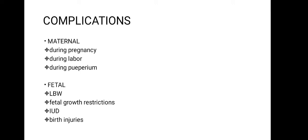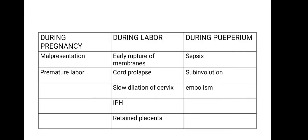Moving on to complications, these are divided into maternal and fetal. Fetal complications include low birth weight, fetal growth restriction, intrauterine death (IUD), and birth injuries. Maternal complications during pregnancy include malpresentation — persistence of breech, transverse, or unstable lie — and chances of premature labor.